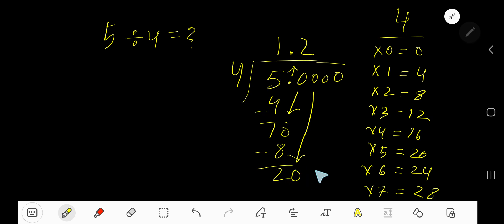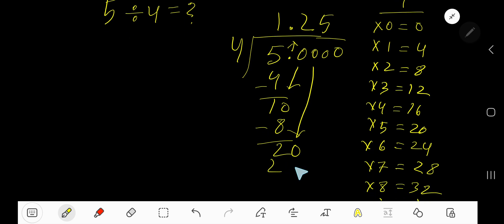4 goes into 20 how many times? 4 goes into 20 five times. Right, so 5 times 4 is 20. Subtract, 0. As our remainder is zero, we're done. So our answer is 1.25.